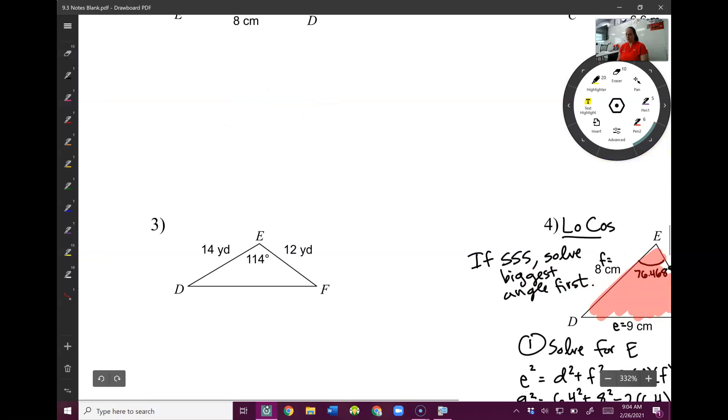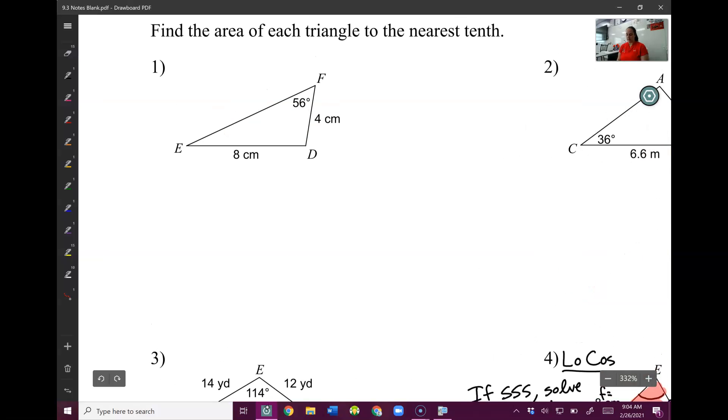Let's do one more problem, and then I'll tell you what your homework is. We're going to do number one. In this case, once again, I have two sides. I do not have the angle between those two sides, and that's a problem. That's what I need to find.